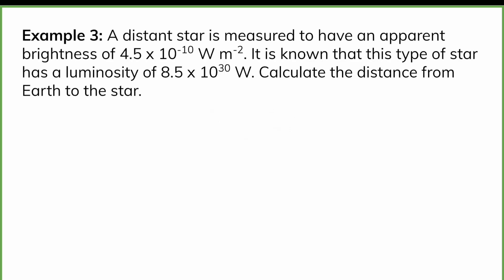We have a distant star. It's measured to have an apparent brightness of 4.5 times 10 to the negative 10. And we know that this star has this particular luminosity. So we want to determine the distance from the Earth to the star. And this is actually a common approach for finding distances in space. So B is given as 4.5 times 10 to the negative 10. L is 8.5 times 10 to the 30. And we're looking for our distance D. So we have the equation B is equal to L over 4 pi D squared. And some people prefer to put numbers in and then solve. This time I'm going to solve for D squared and then plug my numbers in.